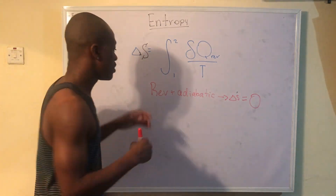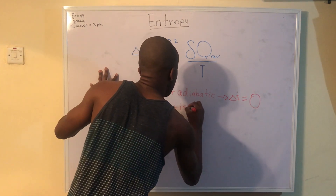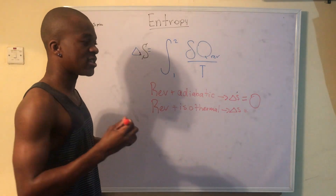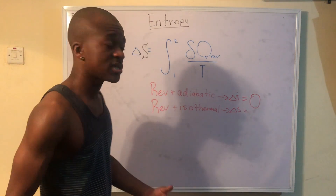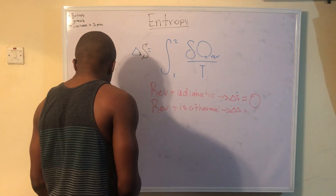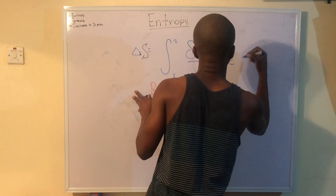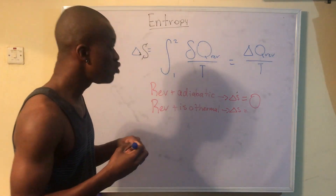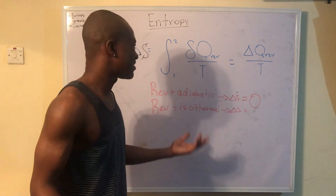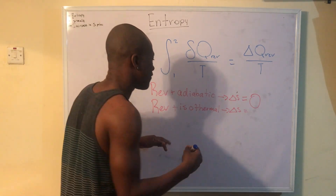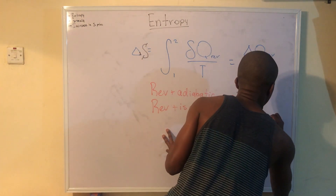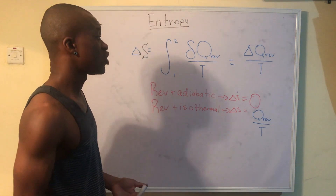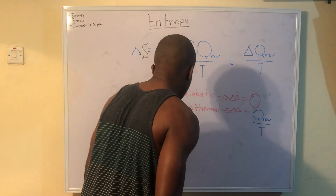For the reversible and isothermal process: isothermal means temperature stays the same, so T becomes a constant that we can pull out of the integral. We end up with ΔS = Q_reversible / T. A lot of the time we may be dealing with an isothermal process, so just keep that in mind.